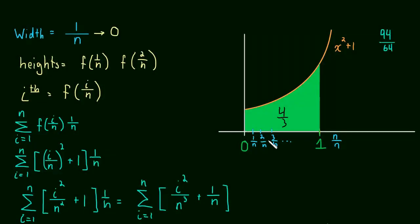That to me is wild. You're summing up an infinite amount of infinitely small rectangles and you're getting a number, an exact value, four-thirds. That is the area under that curve. That's wild.